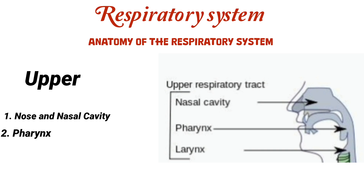Number two, the pharynx, also called the throat. The pharynx is a muscular passage that connects the nasal cavity to the larynx and the esophagus. It serves as a common pathway for both air and food.